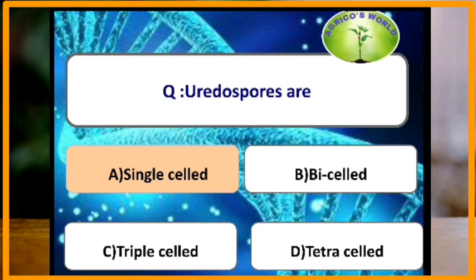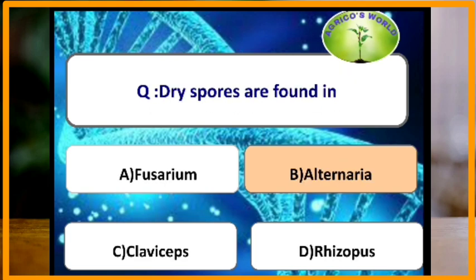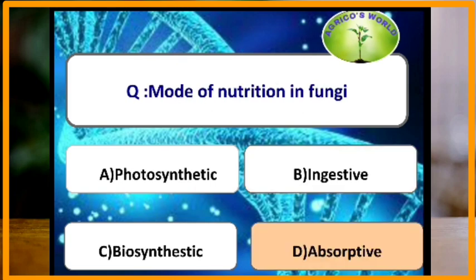Uredospores are single-celled and binucleated. Basidiospores of black rust germinate on barberry, whereas aeciospores germinate on wheat and cause the infection. Dry spores are found in Alternaria.